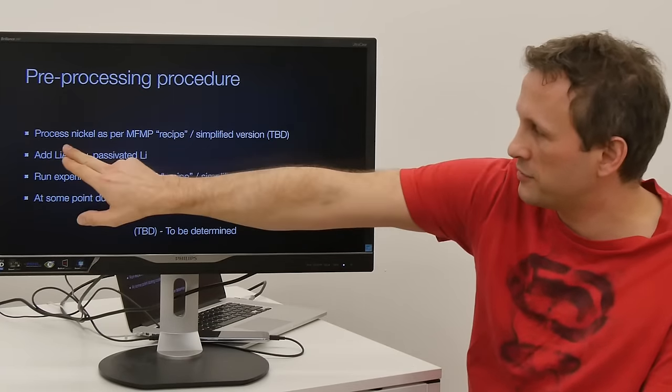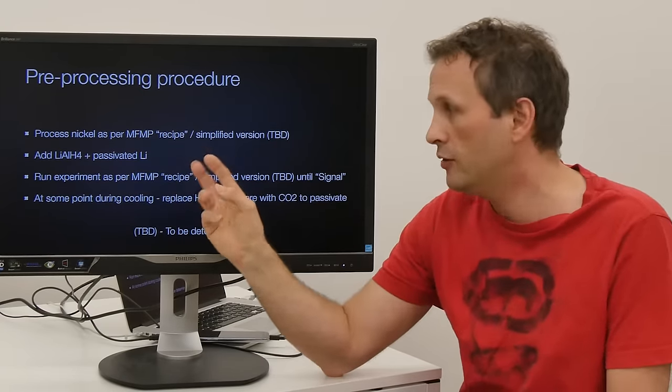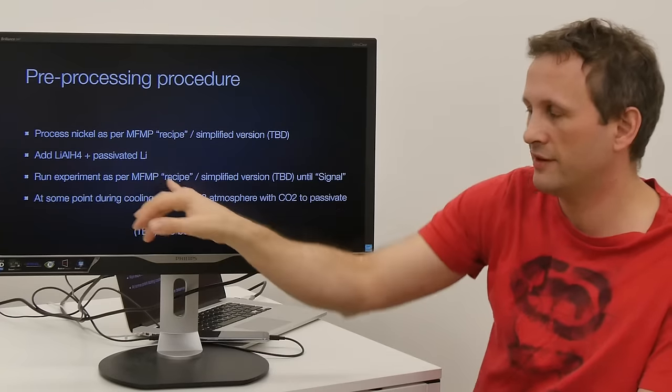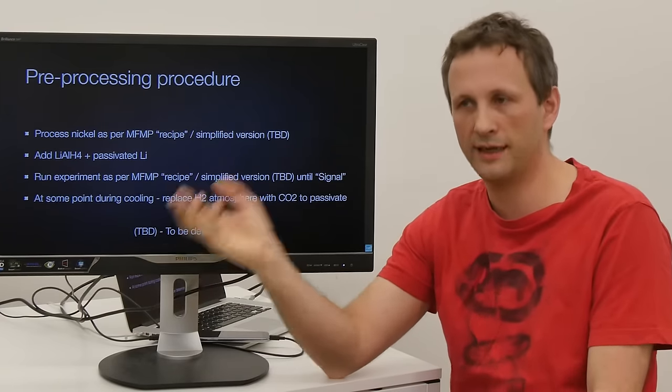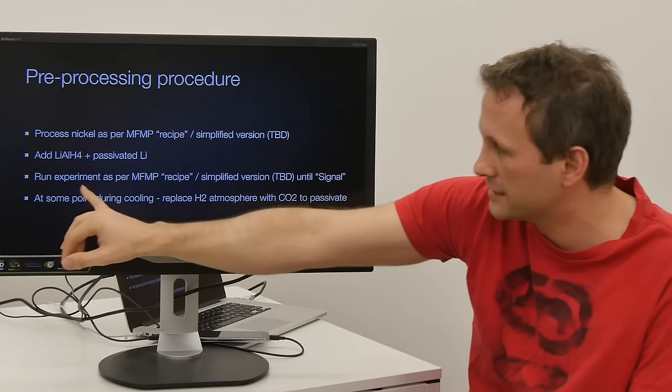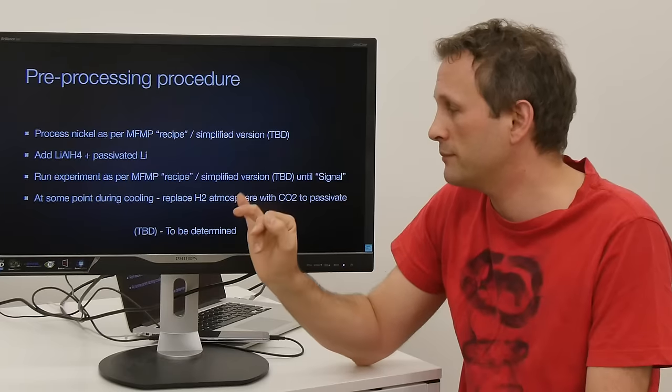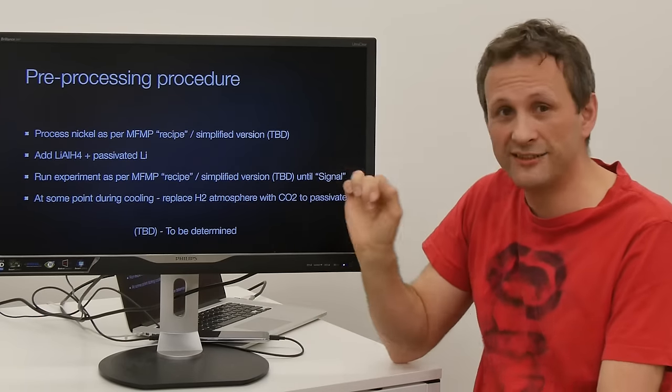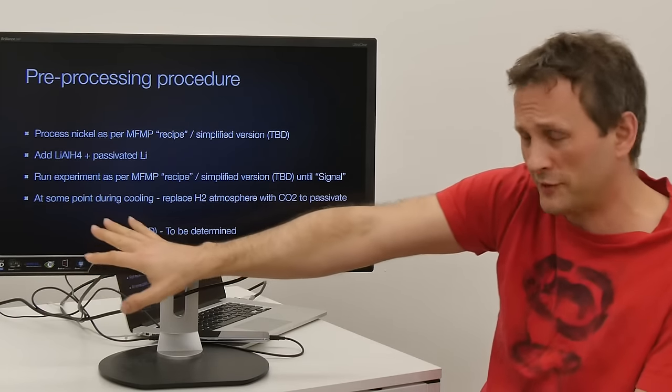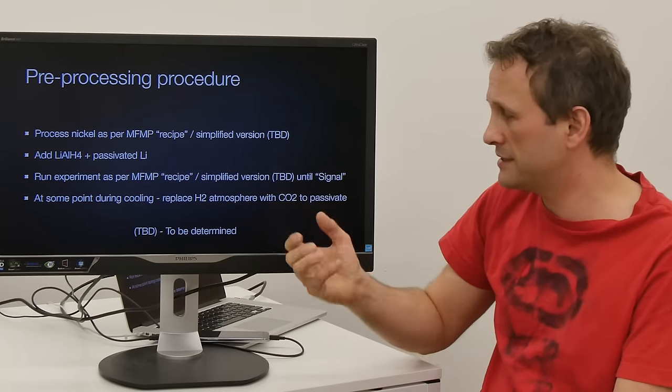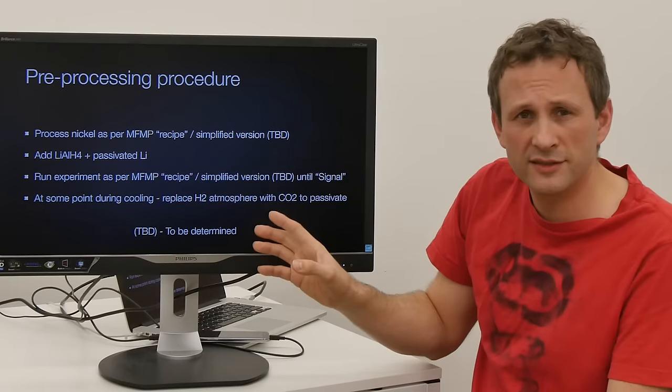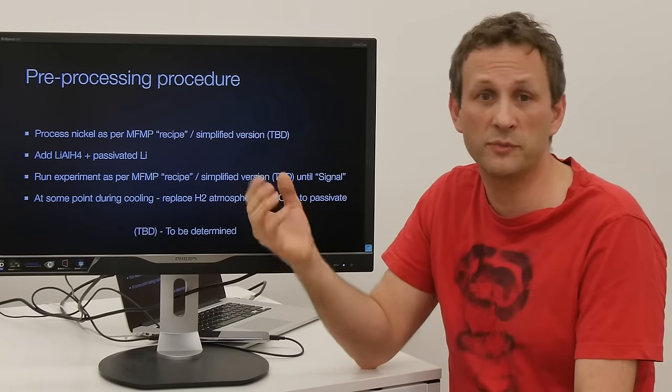So essentially what we are doing is pre-processing the nickel as per the MFMP recipe or simplified version to be determined. You add the lithium hydride and passivated lithium and then you mix it and put it in an argon bag, mix it, put it into the reactor. And then you process it by running the experiment as per the MFMP recipe, simplified version to be decided at some point, until you see the signal. And then at some point during the cool down, you replace the H2 atmosphere with CO2 to passivate. These things need to be worked out, but essentially that's the kind of process you would do to pre-process your fuel.